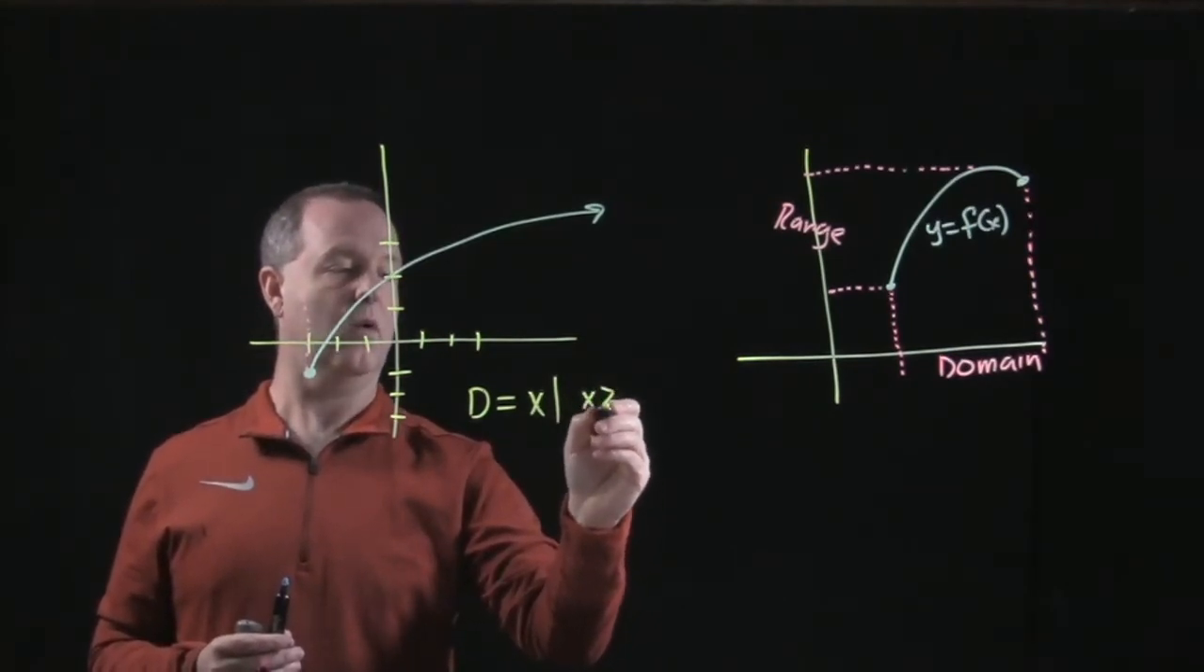Well, its domain, again, are all the values where I see along the x-axis. So it looks like it's right here. And since that graph goes out forever, it goes out forever. So my values of x, or my domain, are all values of x such that x is greater than or equal to negative 3. And we call that set builder notation if I were to provide the solution in that particular way.